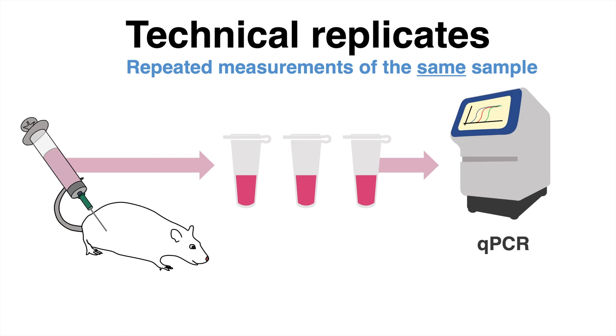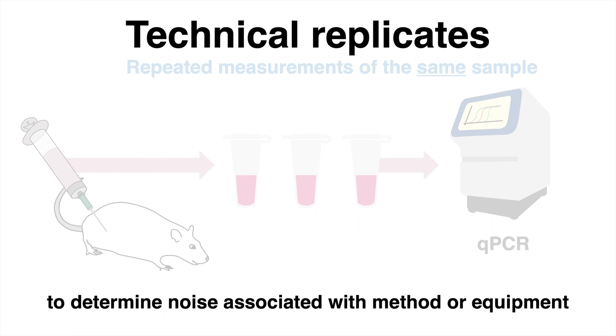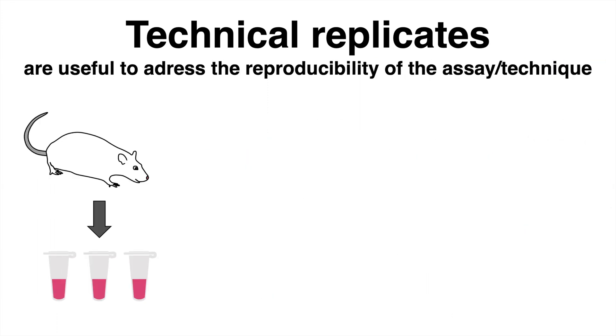Technical replicates are used to determine noise that is associated with the assay or protocol or variance that is caused by the equipment. That also includes variance caused by pipetting. Technical replicates are extremely useful to address how reproducible the method or technique is.